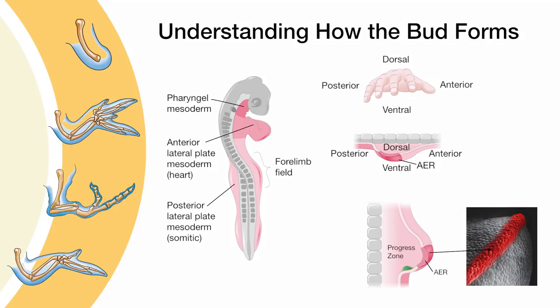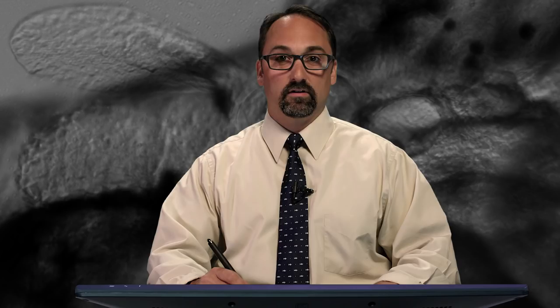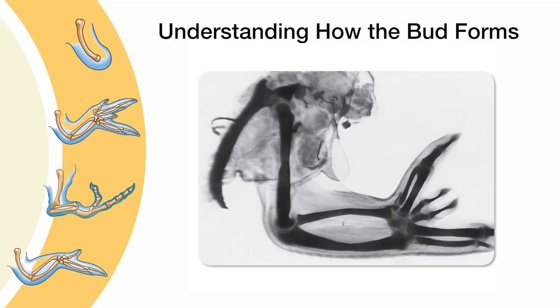The last distinct region of the limb bud is restricted to a small portion of the posterior most bud, which was identified not because of a physical distinction, but rather due to its unique functional activity. When this region was ectopically transplanted to the anterior side of the chick forelimb bud, it resulted in the dramatic mirror image duplication of its digits. For this reason, it was aptly termed the zone of polarizing activity, or ZPA.